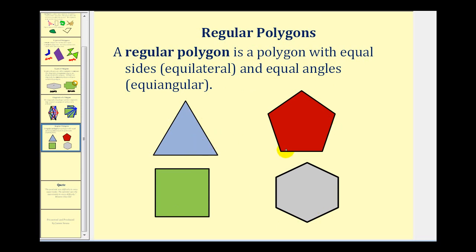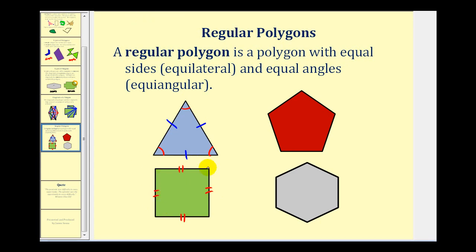Here we see four examples of regular polygons. If all of the sides are the same length, we put the same number of hash marks on each side to indicate equal length. We can also put a single arc through each angle to identify that all angles are equal measure, and we could do the same on the remaining three polygons. If I put two hash marks here on a regular polygon, I'd have to put two hash marks on each side. For the angles, I can put the same number of arcs, or make a single arc with the same number of hash marks through each arc.